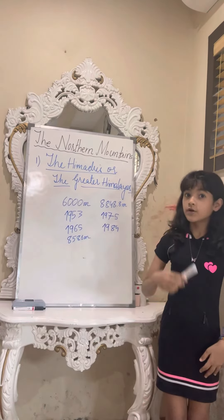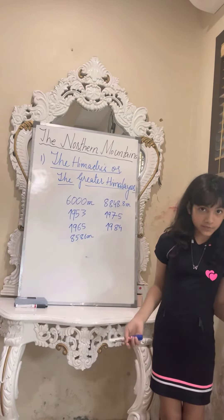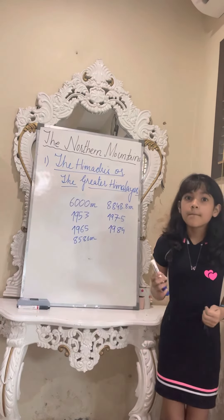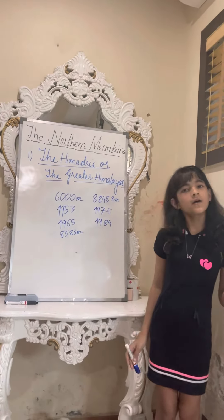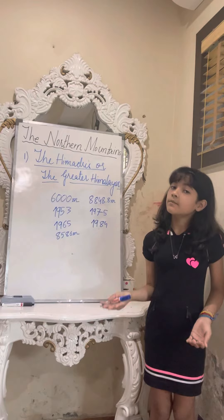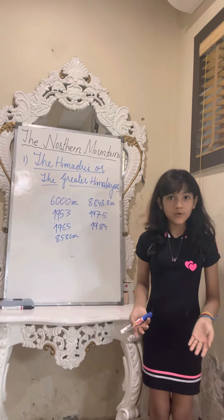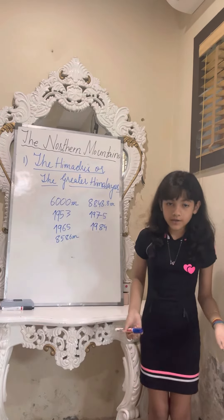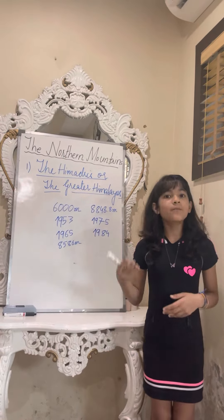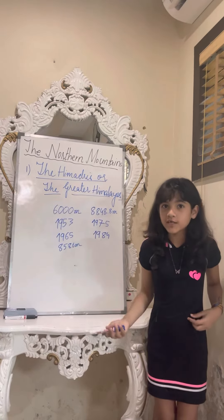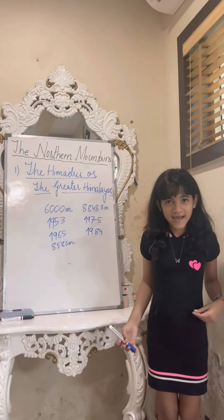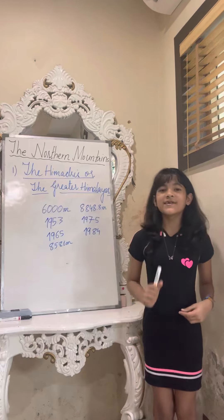Some important passes are Zoji La Pass and Nathu La Pass, found in the states of Arunachal Pradesh and Sikkim. Many rivers like the Ganga from the Gangotri Glacier, Yamuna from the Yamunotri Glacier, Brahmaputra from the Chemayungdung Glacier, and Indus from the Bokhar Chu Glacier also originate from the Himalayas.